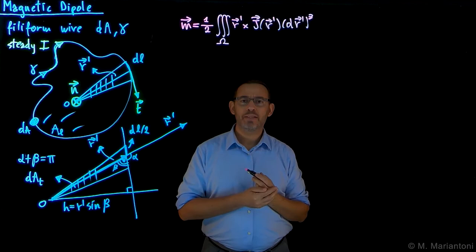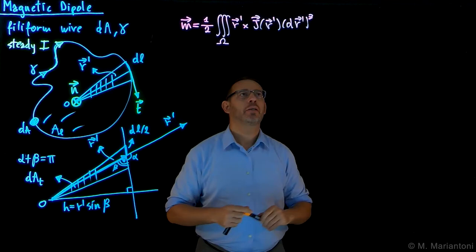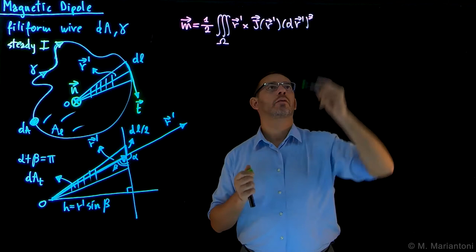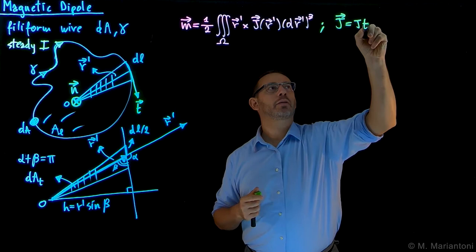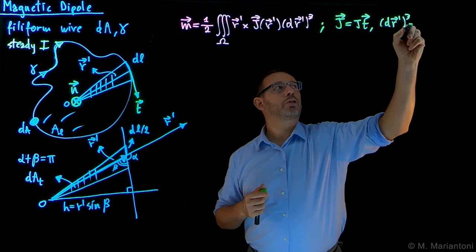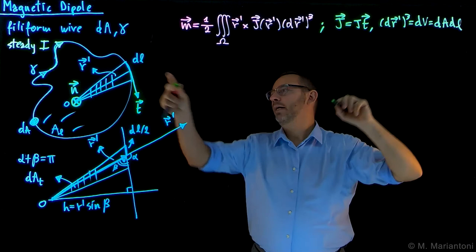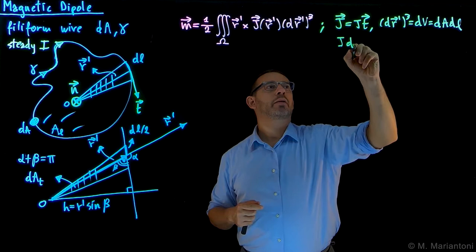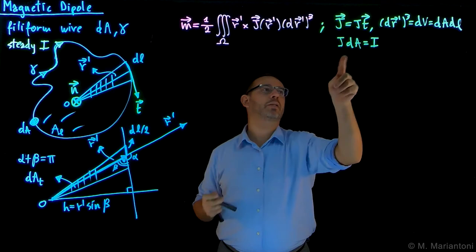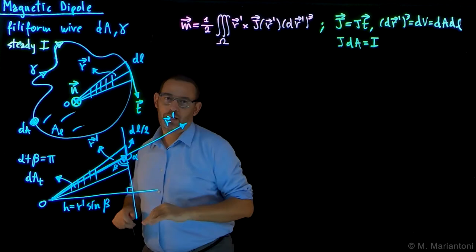Since we know that, now what happens if I'm considering a filiform wire? Well, as always, we need to remind ourselves that in this case, we have that J is actually equal to J times T. D r prime cube, which is dV, is equal to dA times dl. In addition, at steady conditions, J dA is the flux that gives me I. So I remind you that in the bulk case, we call it dI. Since we only have one single spaghetto, we just call it I. This is the overall current, because we don't need to sum it up to get a bulk wire. In the bulk wire, we would call it dI.